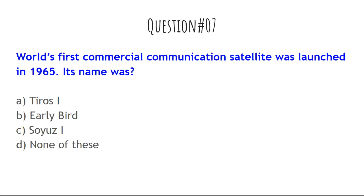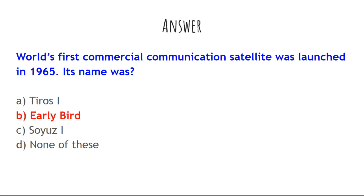The next question is: The world's first commercial communications satellite was launched in 1965 — what was its name? The options are: Tire of One, Early Bird, Soyuz One, or none of these. There are two things to remember: it was launched in 1965, and its name was Early Bird.